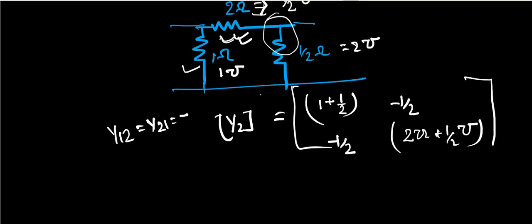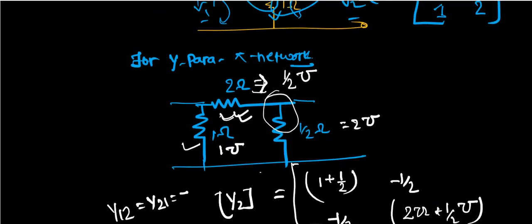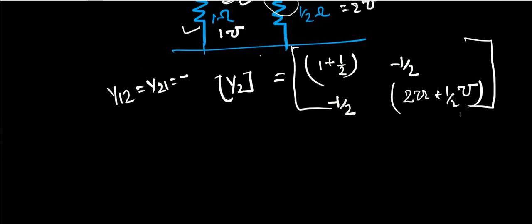It is direct this way. Otherwise, you can also use KVL the other way, but T and pi you can remember to keep it easy. So what is Y2? 3 by 2, minus 1 by 2, minus 1 by 2, and 5 by 2. This is the Y2 matrix.